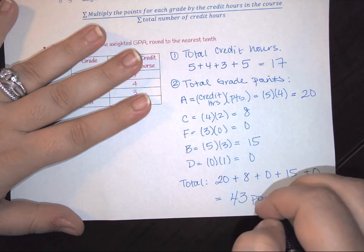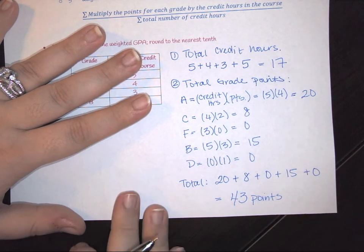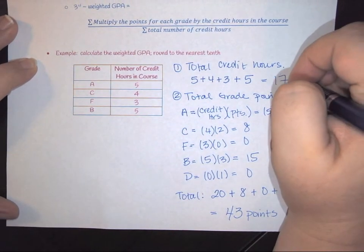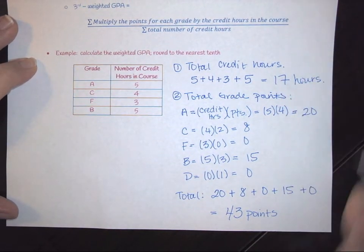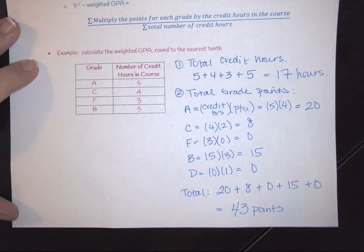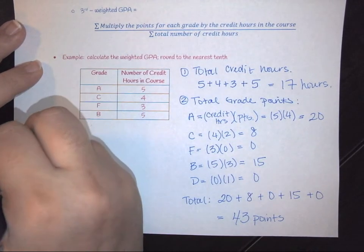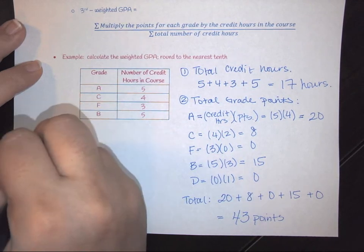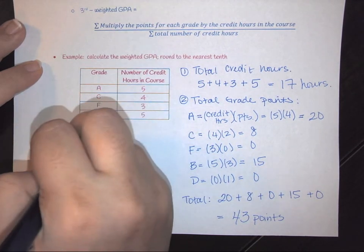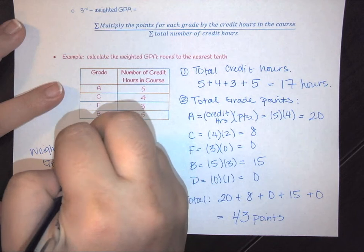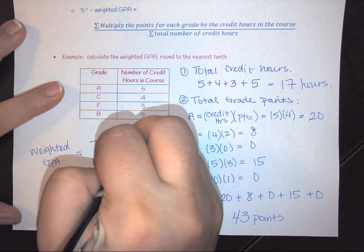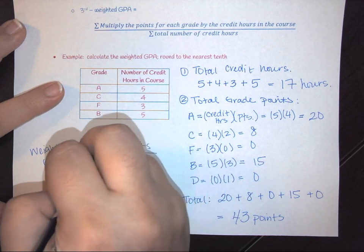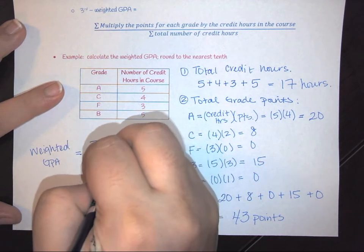And then this was the last thing. In order to find your weighted GPA, your weighted GPA is going to be your total points divided by your total credit hours.